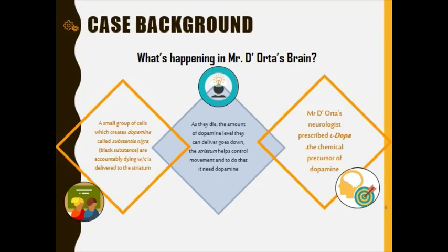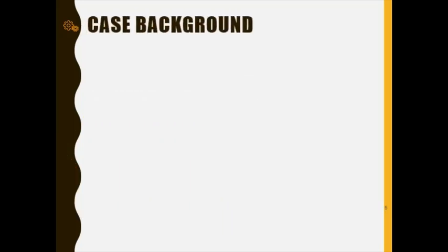L-DOPA is not dopamine itself — it is the trigger that causes the substantia nigra to release dopamine. It acts as a signal telling the neurons to release dopamine. It is a chemical precursor that initiates dopamine release.